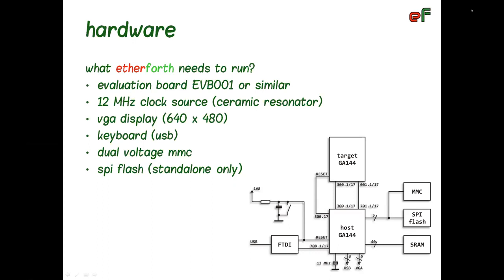Standalone version of Etherforth uses also an onboard SPI flash memory. Notice that Etherforth system runs in host chip only. The target chip is reserved for application code and can be located on the same board or external. The serial line and USB to serial converter are needed for bootloading the system from a PC or for burning the system image into the SPI flash. When Etherforth is running, it does not need those anymore.